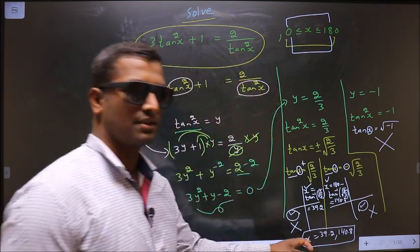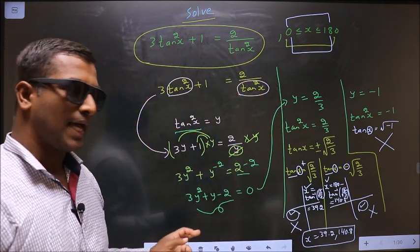So x values are 39.2 comma 140.8. This is our answer. Am I clear?